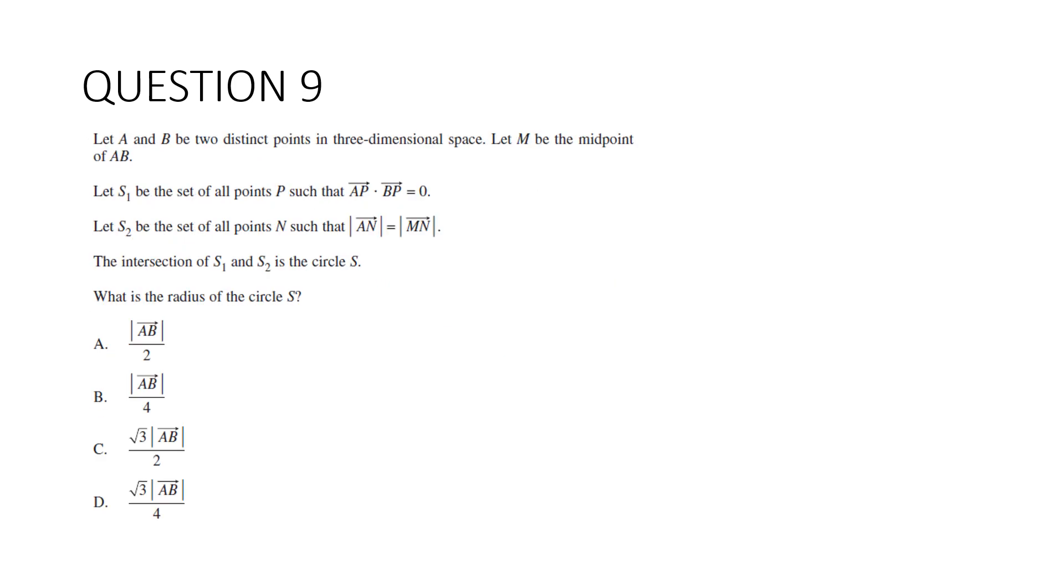Question 9. Let a and b be two distinct points in three-dimensional space. And let m be the midpoint of a, b. Let S₁ be the set of all points p such that a·p·b·p equals zero. So that's going to be the right angle. Let S₂ be the set of all points n such that |a,n| equals |m,n|. So that's going to be a line through here. That's n there. So that distance equals that distance there.